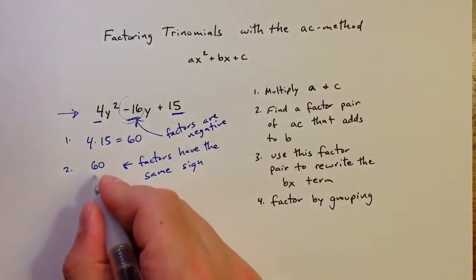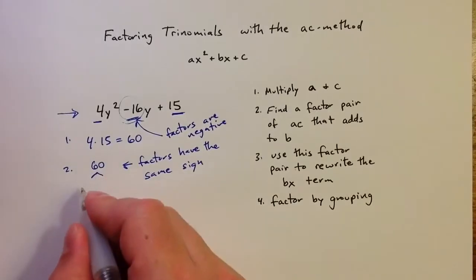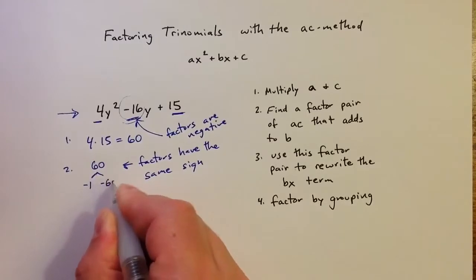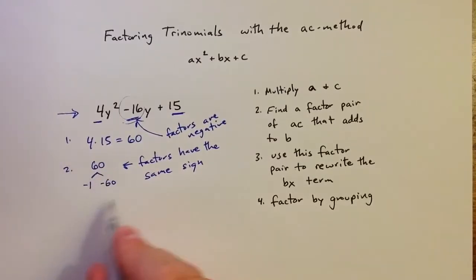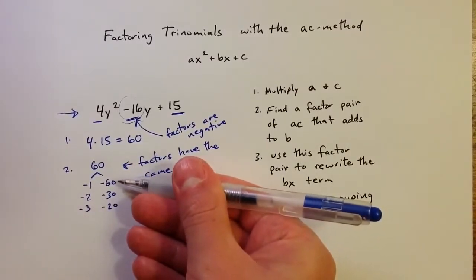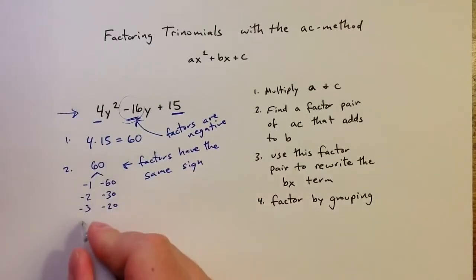So we can be systematic about this. Some of you may have an idea of what the factors are going to be right away, if you think about what adds to negative 16, and it would be a factor pair of 60. But if you don't think of that right away, we could just write the list, starting with negative 1 and negative 60, negative 2 and negative 30, negative 3 and negative 20.